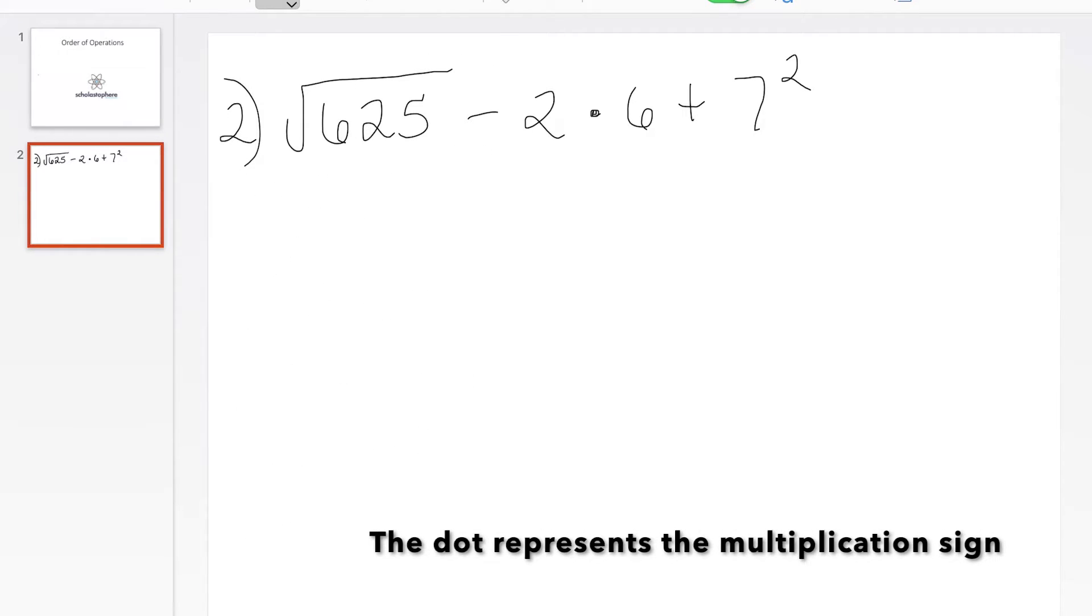So we have the square root of 625 minus 2 times 6 plus 7 squared. In this case, it's a little bit special and different from the previous problem because we have a root. So we're going to take the root, or the root and the exponent are done first.